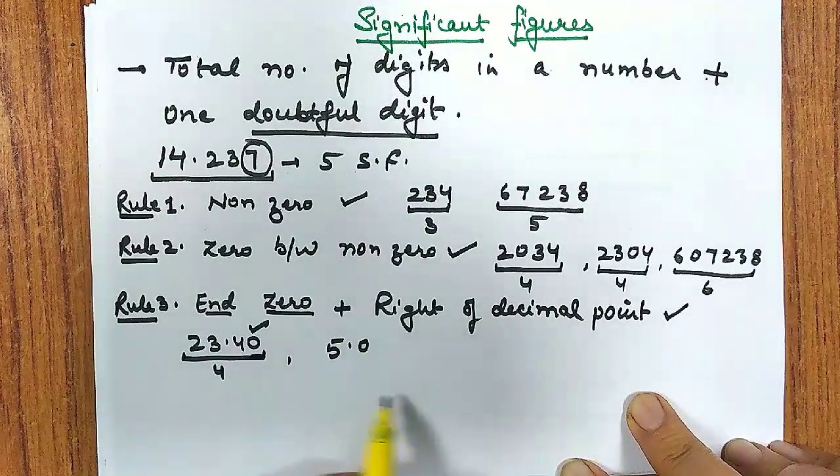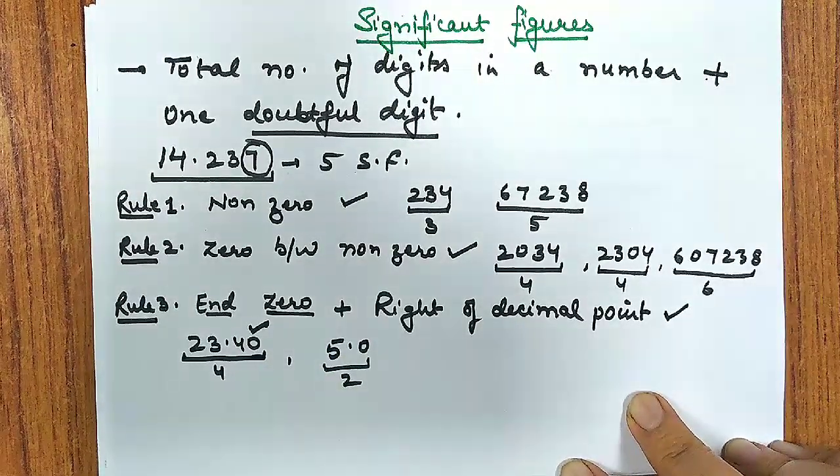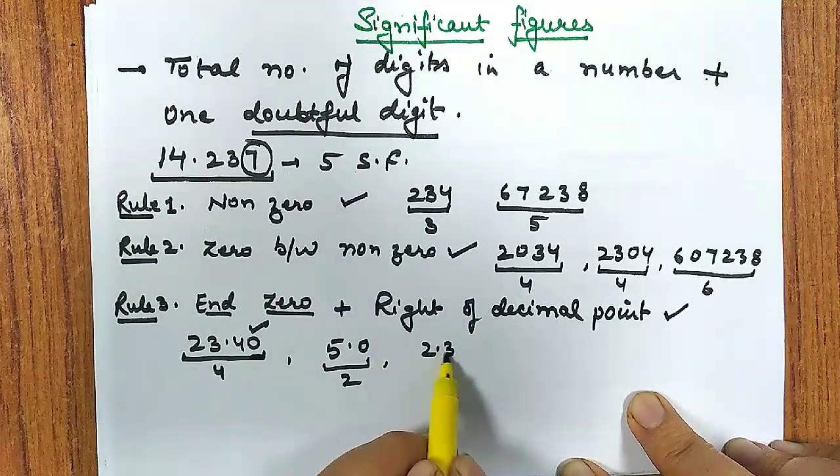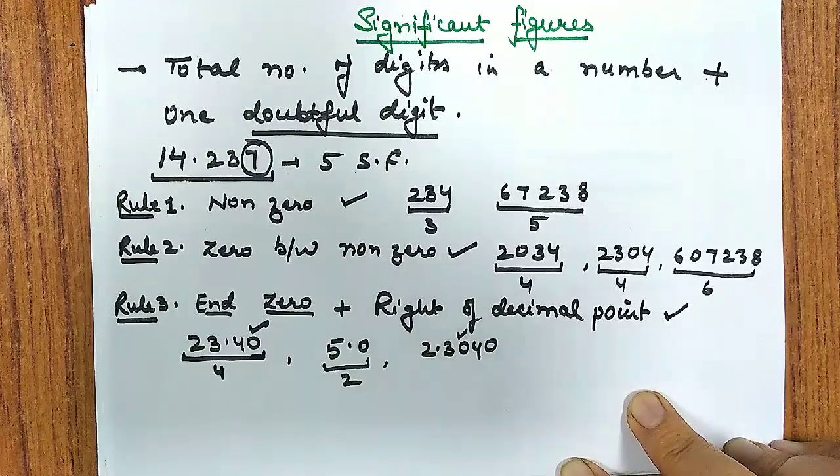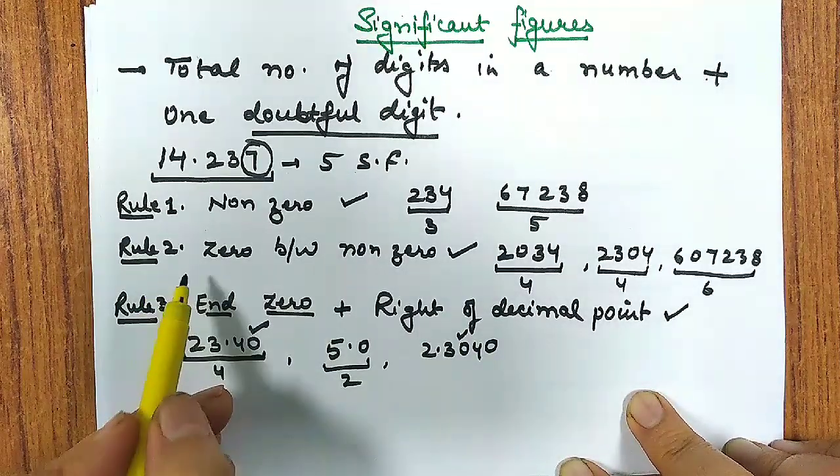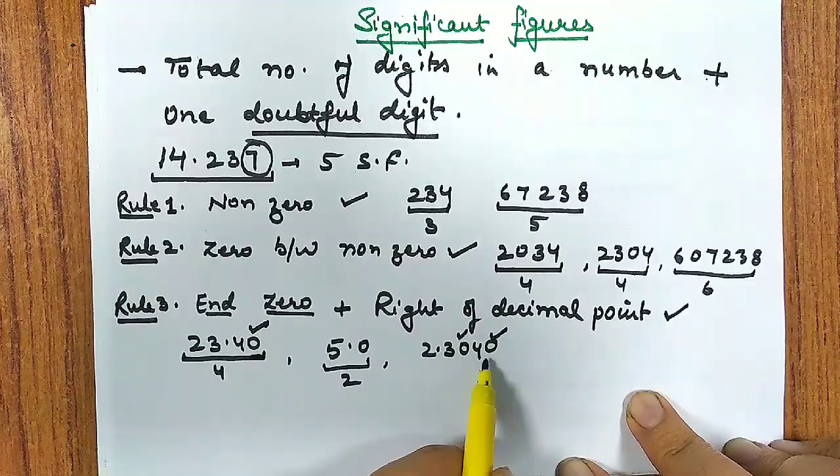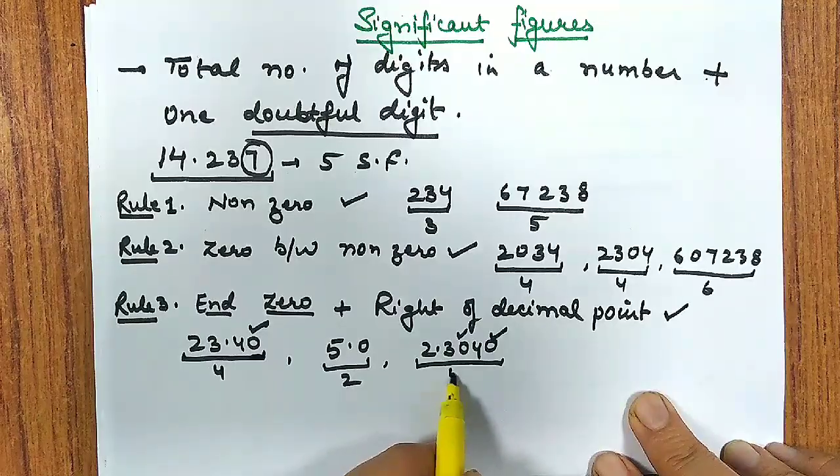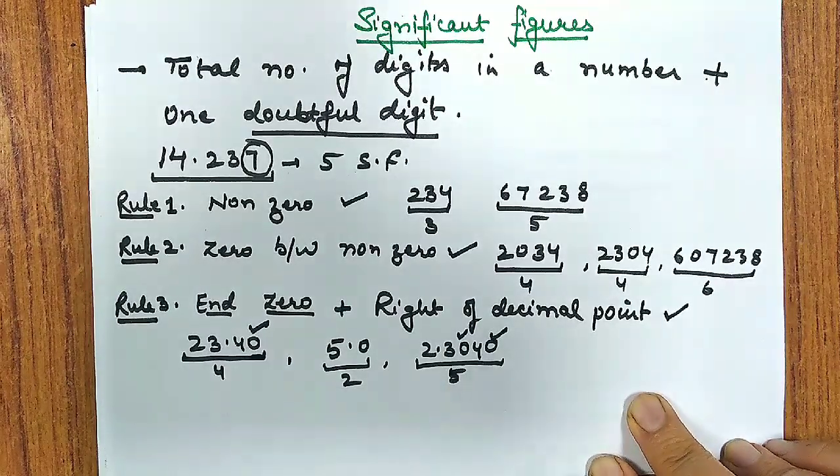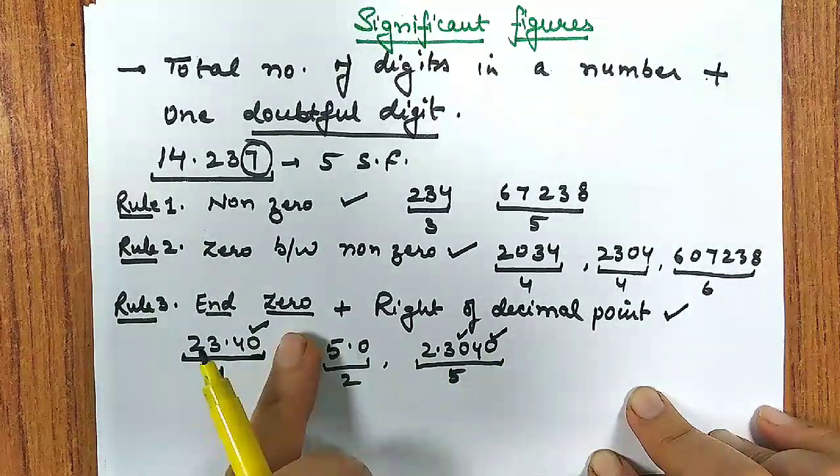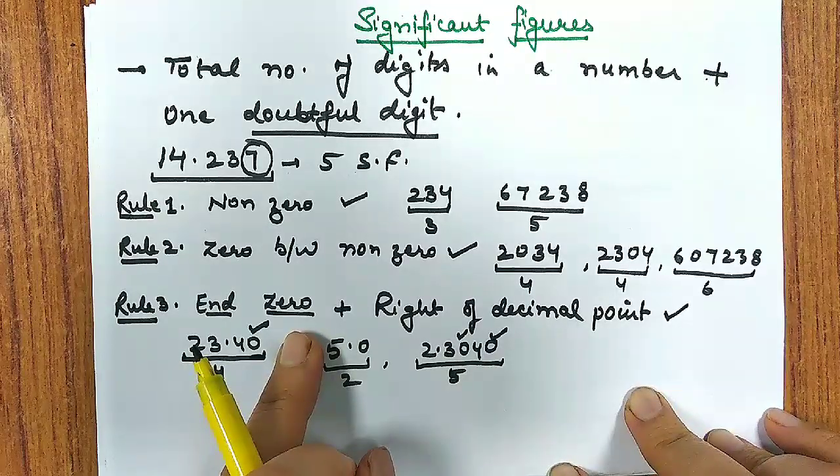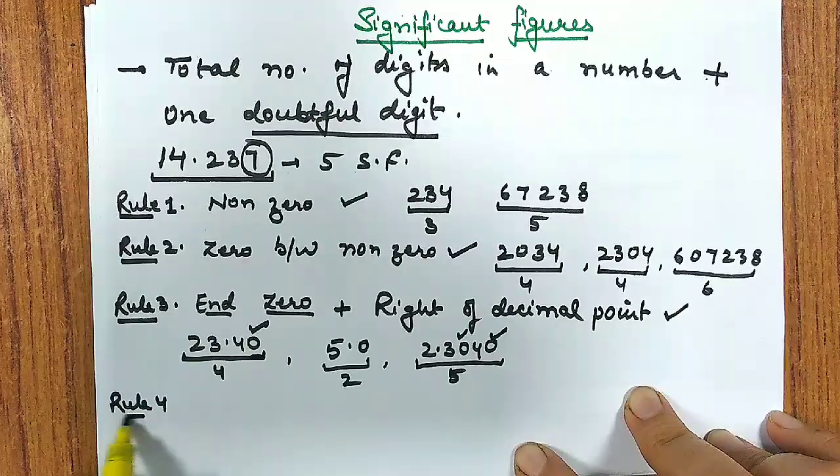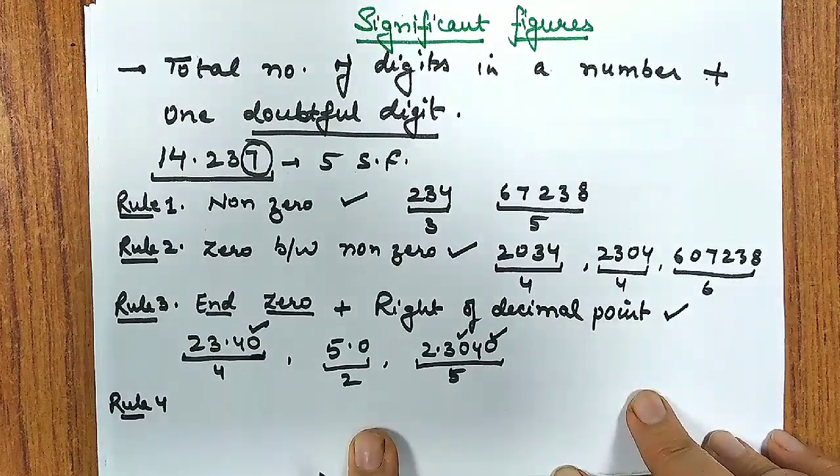If I write it as 2304, between two non-zero, yes it is significant. If I take this value 60738, zero placing between two non-zero numbers, I will be having six significant figures. So again there is no problem in counting such zeros which lie between two non-zero digits.